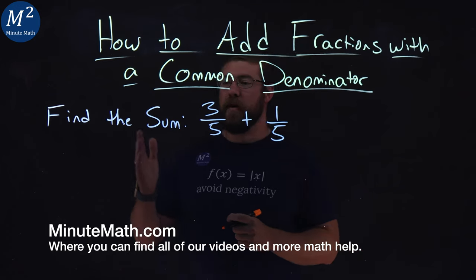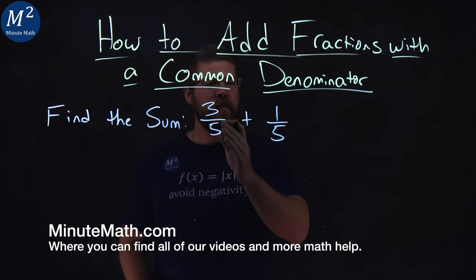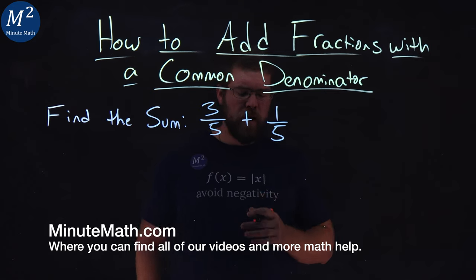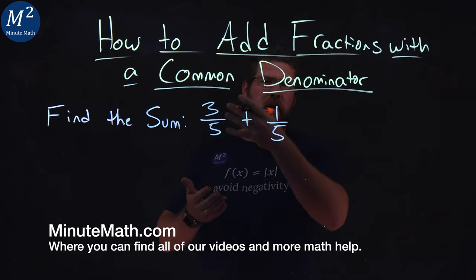We're given this problem here. Find the sum of three-fifths plus one-fifth. As we can see in the problem, we have a common denominator.